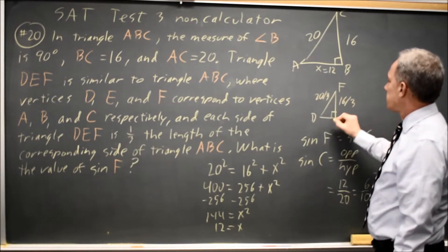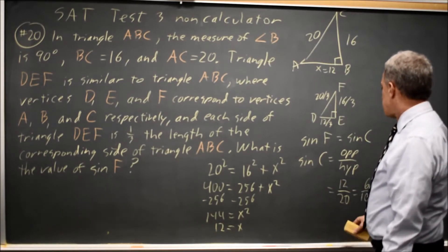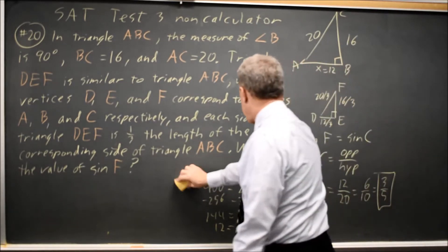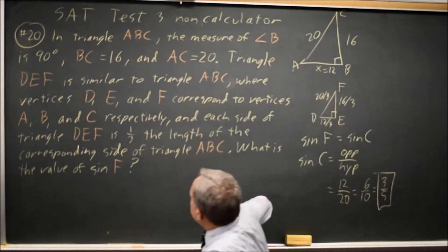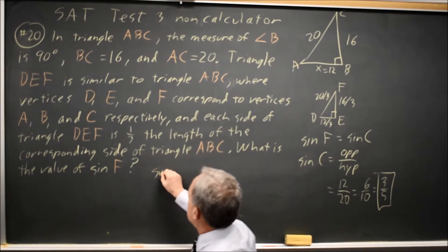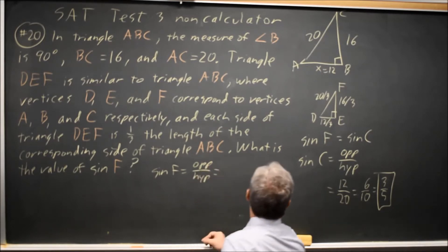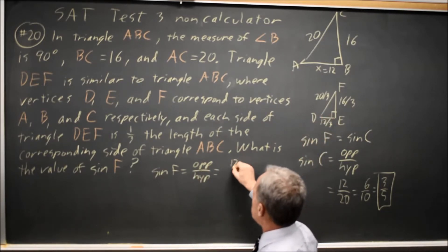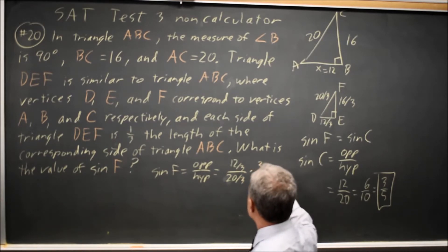and 12 over 3. And working directly with angle F, the sine of angle F is the opposite over the hypotenuse for the smaller triangle. The side opposite angle F is 12 over 3. The hypotenuse is 20 over 3.